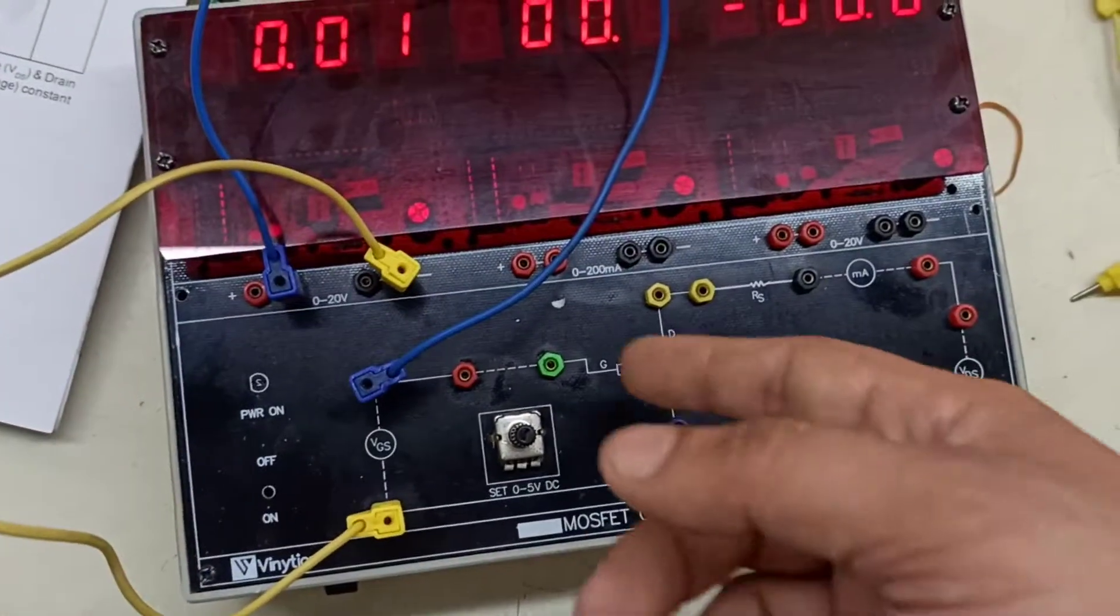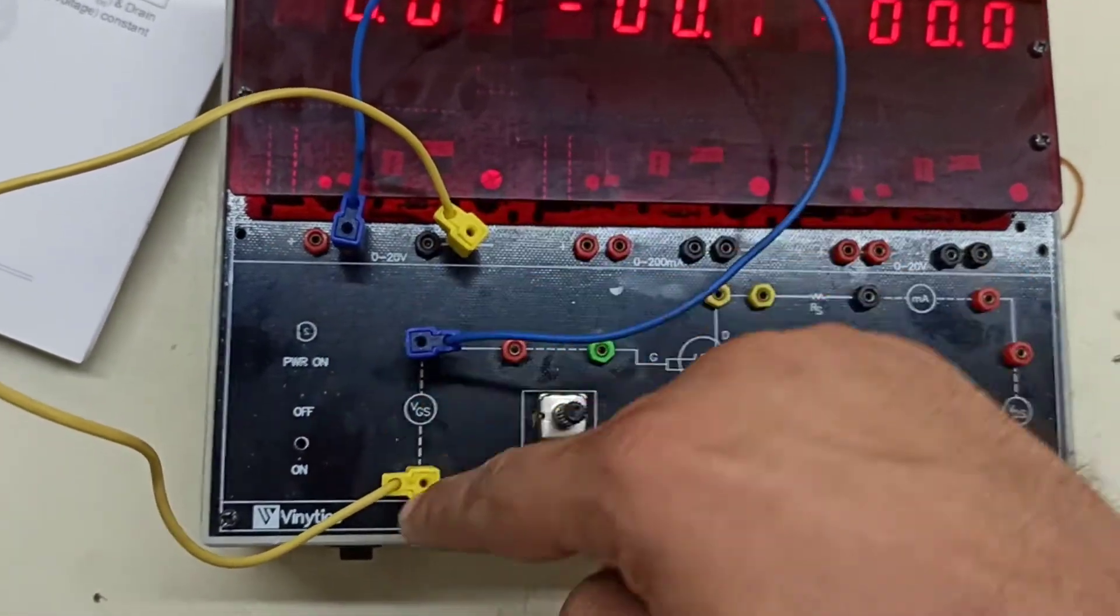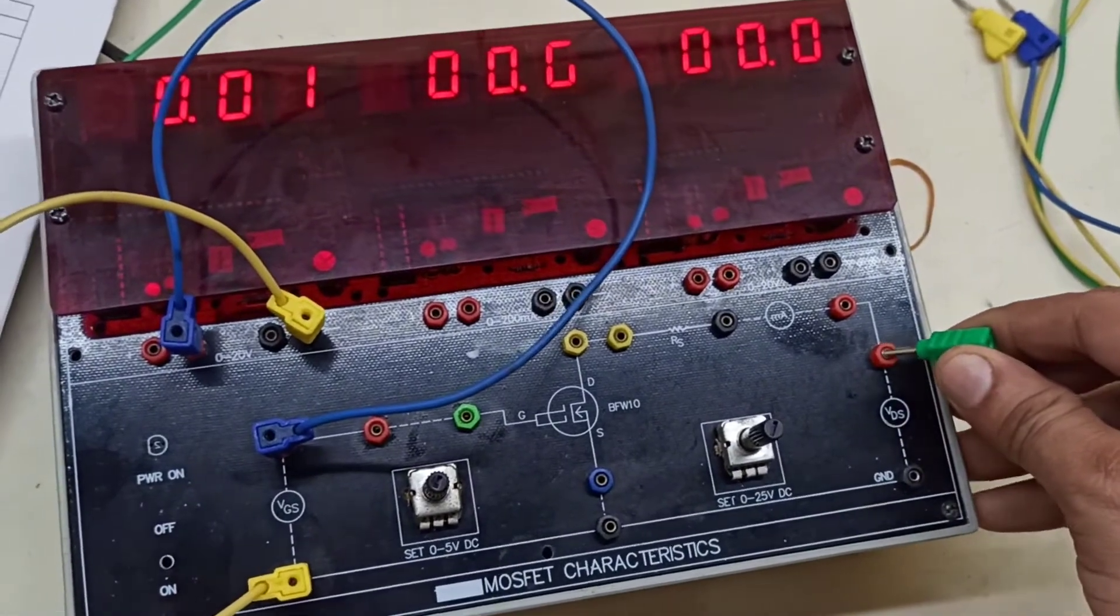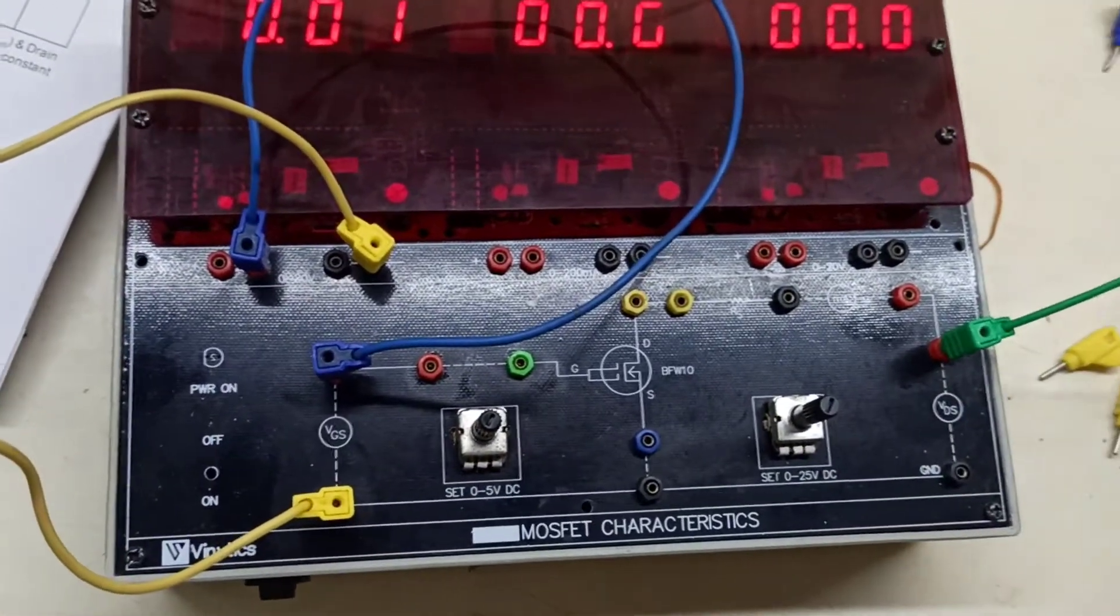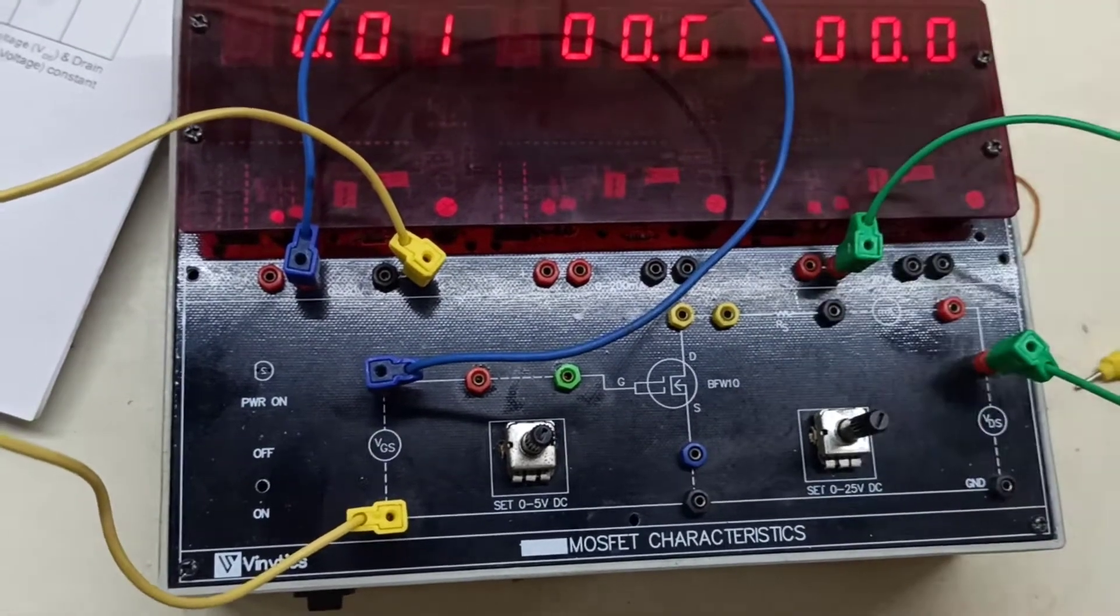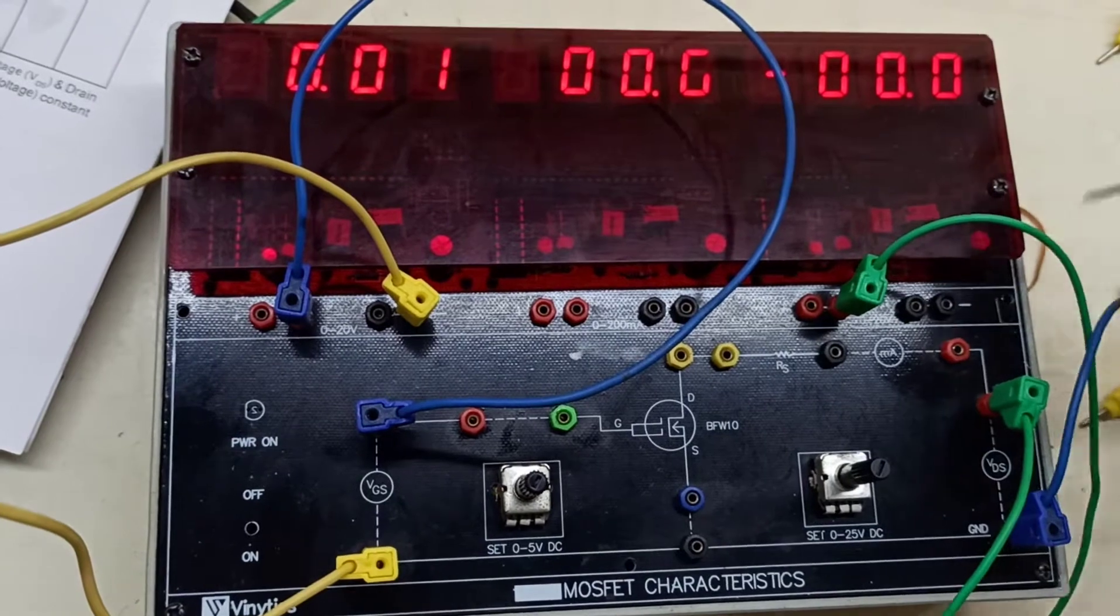So the connections are quite simple. It is all color coded, red to red and black to black for voltage, and again red to red and black to black for the other voltage source.